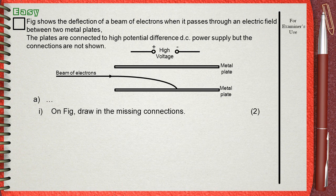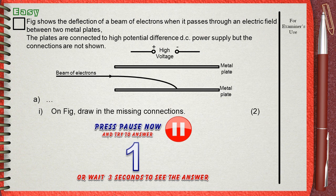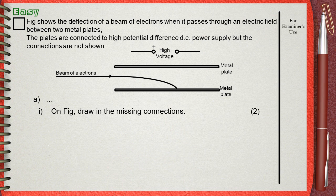Part A: On the figure, draw the missing connections. The beam of electrons is attracted to the bottom plate and repelled from the top plate.